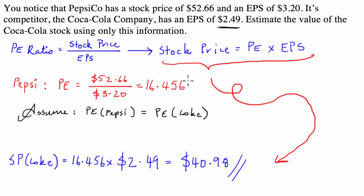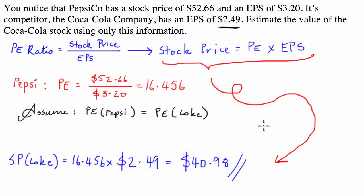But in this simple example, we can see that if we assume companies in similar industries have similar P/E ratios, we can estimate the value of Coca-Cola to be $40.98 based on an earnings per share of $2.49. It's not a very complicated concept — similar companies should have similar P/E ratios, and we can use a bit of algebra to calculate other stock prices. I hope this video helped; if it did, give it a thumbs up and subscribe to my channel. Until next time, I'll see you soon.